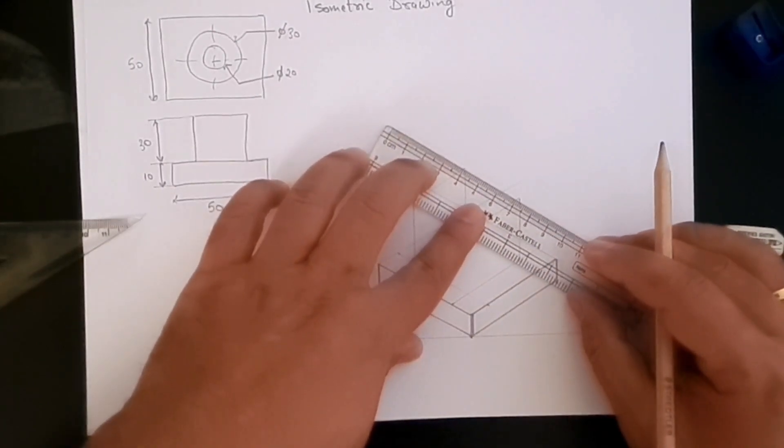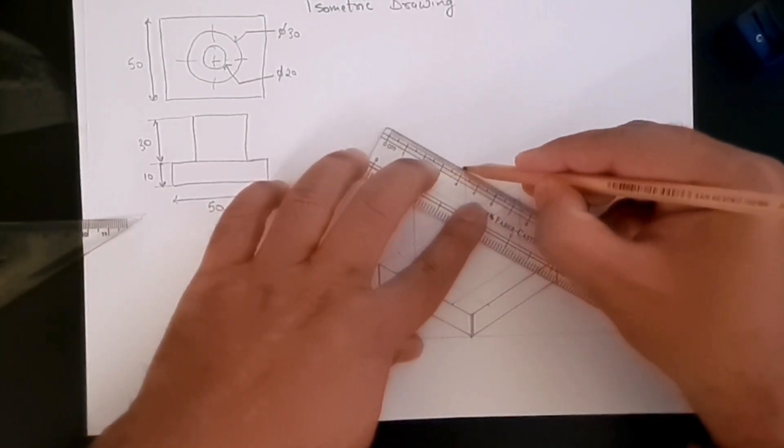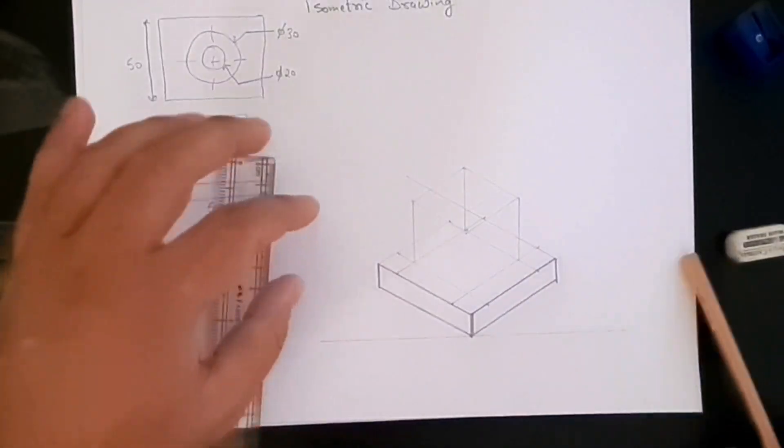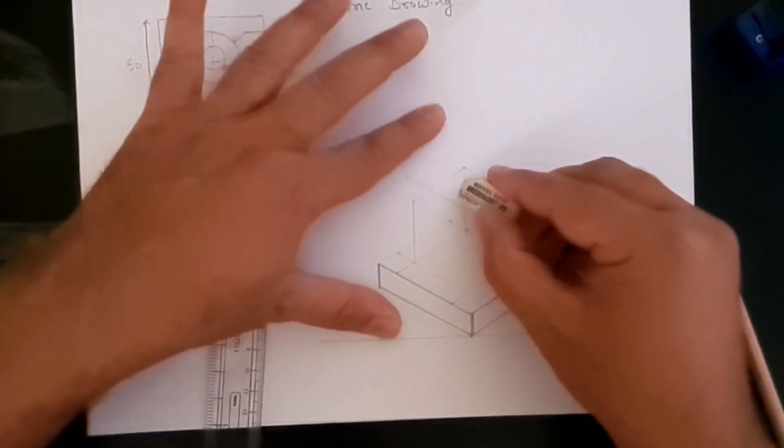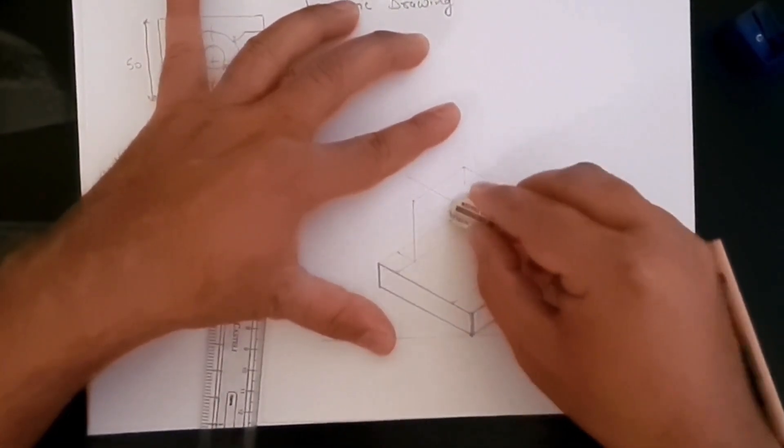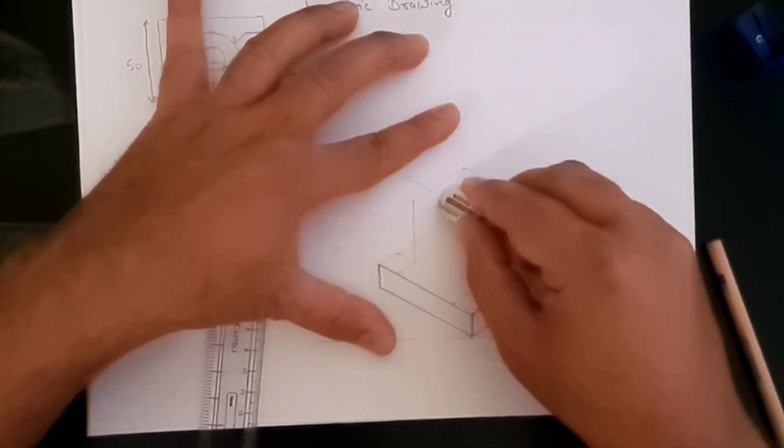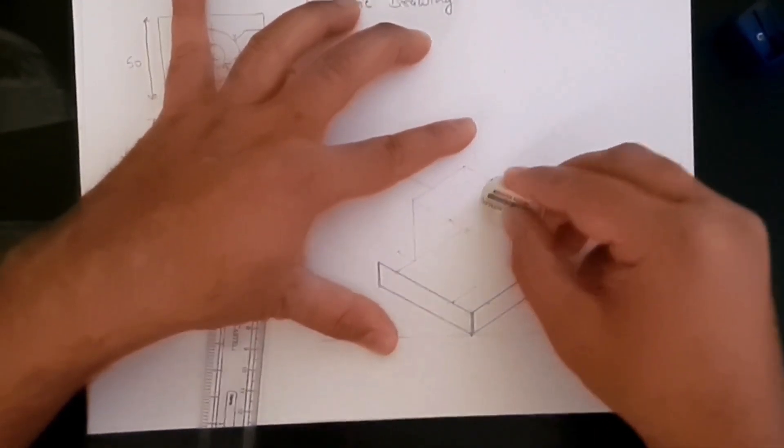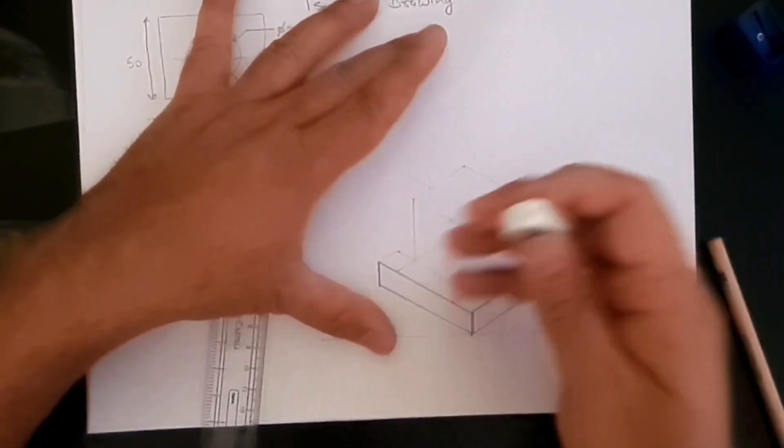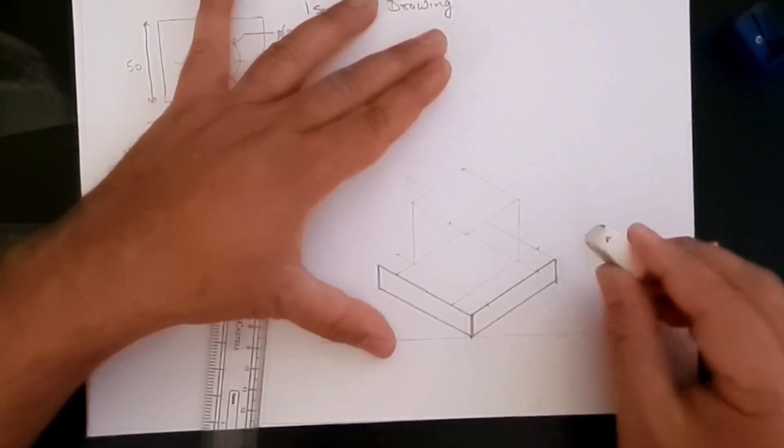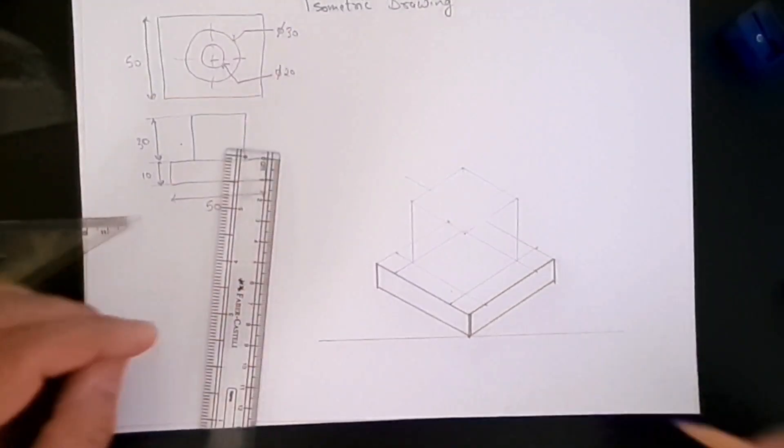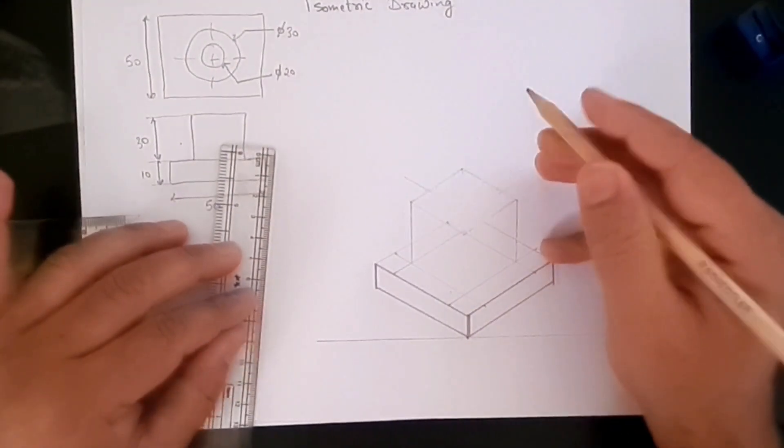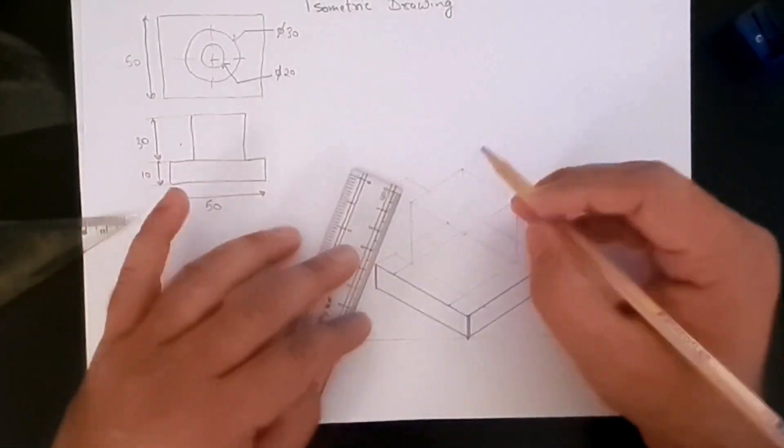Now if you think that it is getting a bit confusing here, what I suggest is the lines that you don't think are useful to you for drawing the circle, let's just erase those lines. And then there are several methods in which we can create isometric circles, so we'll use the quickest method.